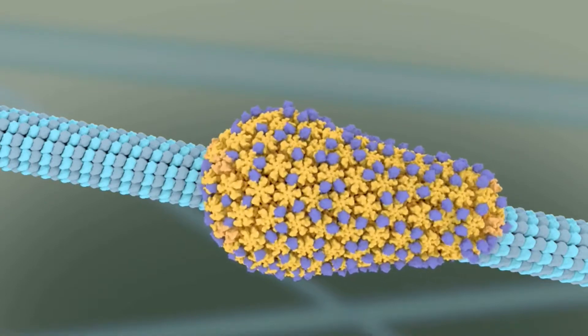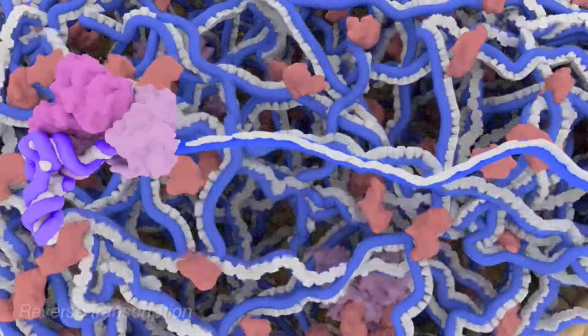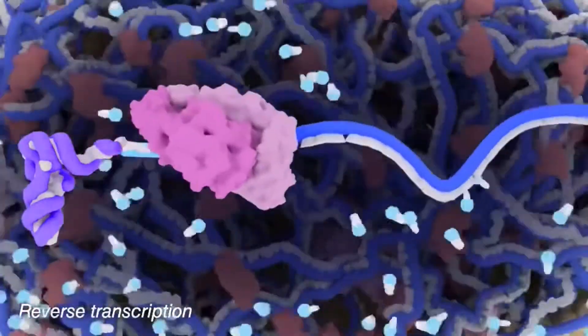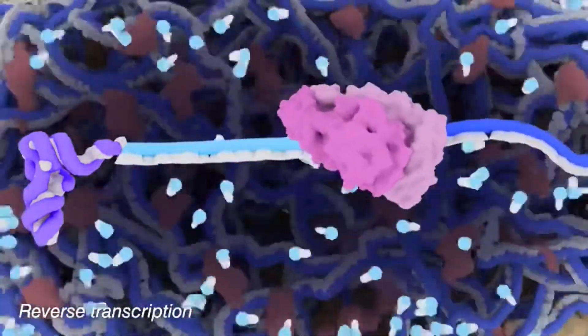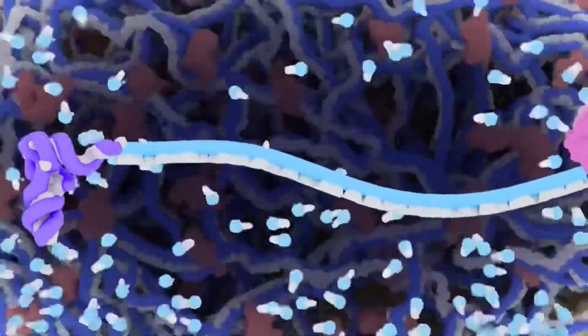During this translocation, a viral enzyme known as reverse transcriptase, or RT, gets to work. RT has already been primed during its time in the capsid, and starts to use cellular pools of DNA nucleotides to make a DNA copy of the RNA genome.